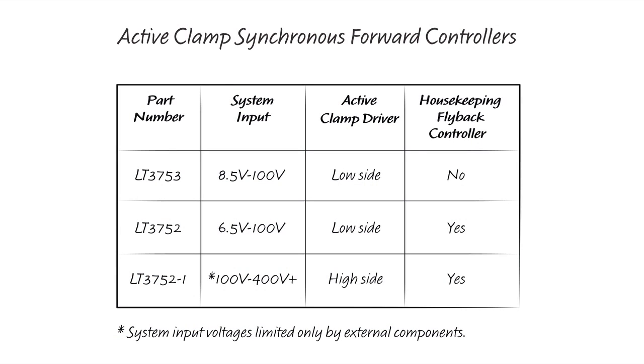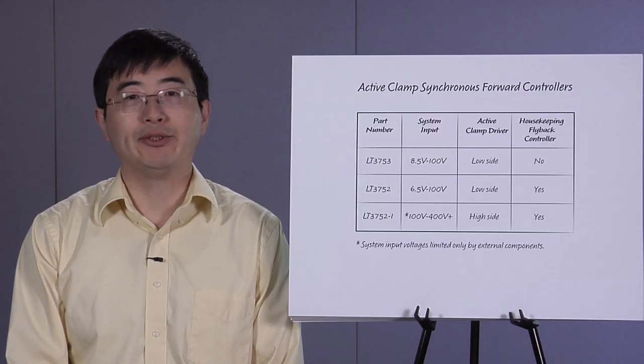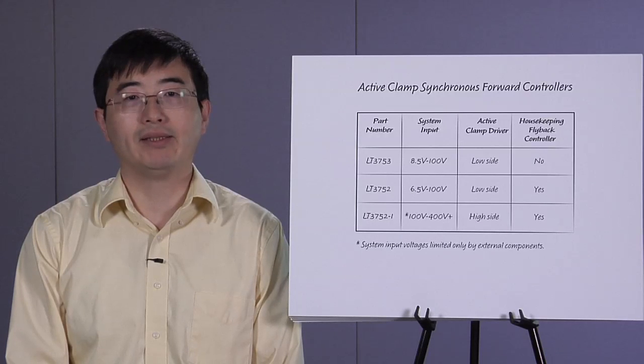The LT3752 and LT3753 are designed for inputs up to 100V, while the LT3752-1 is designed for applications with input voltages greater than 100V, suitable for HV car battery and offline isolated power supplies, industrial, automotive, and military systems.